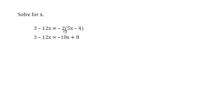The first thing we do again is to distribute. Negative 2 times 5x is negative 10x. Negative 2 times negative 4 is positive 8.